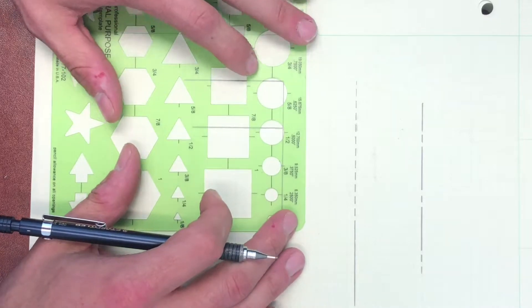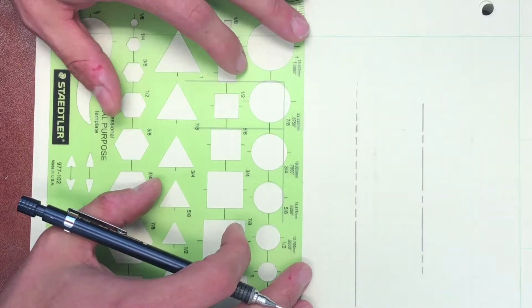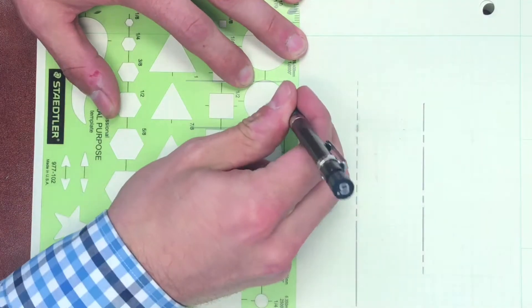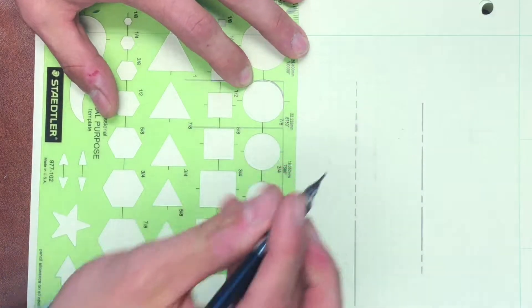Doing fillets is really easy. So if I have a sharp corner here and I want to add a nice radius at the end of that, I can take a one inch or seven-eighths radius right here, line up my circle template, draw the arc.